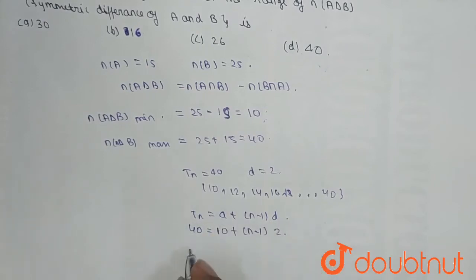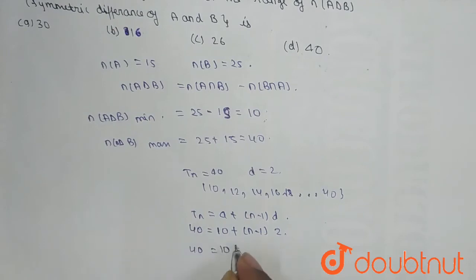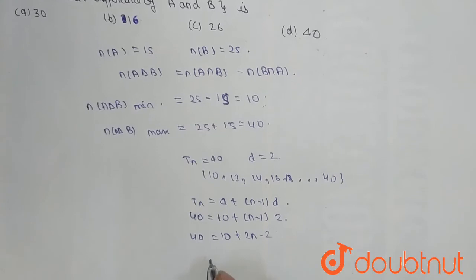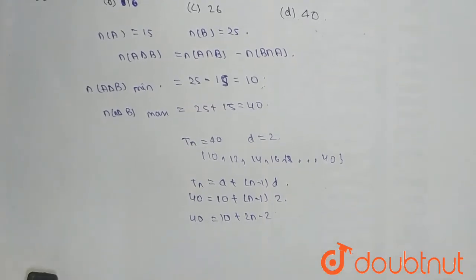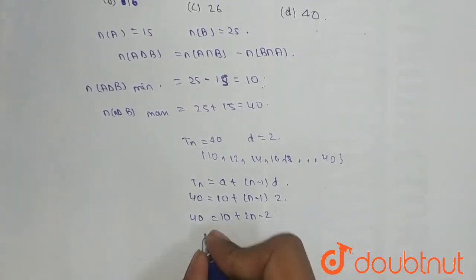So here tn is equal to 40, a is equal to 10 plus (n minus 1) and that common difference is 2. So 40 is equal to 10 plus 2n minus 2. So from here we will get the value of n.